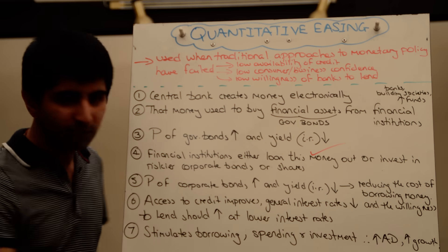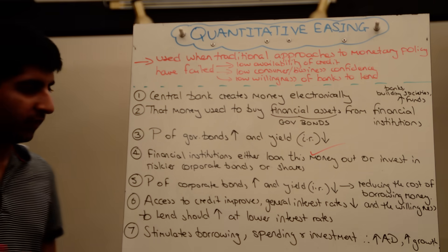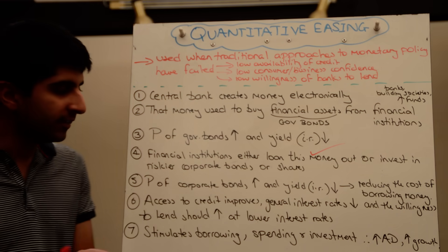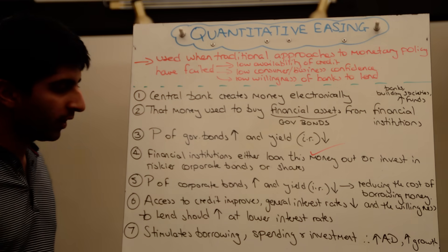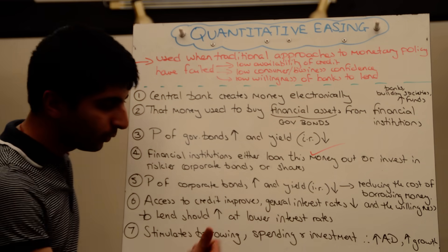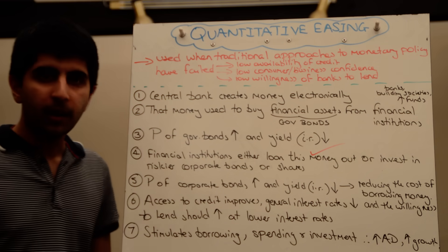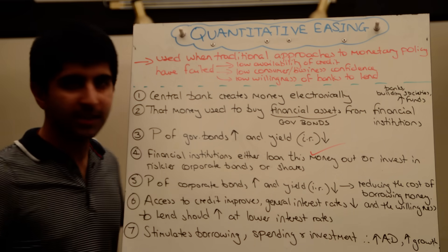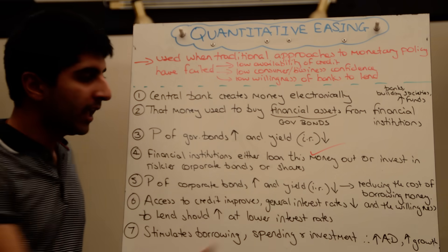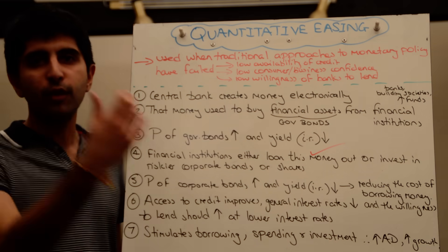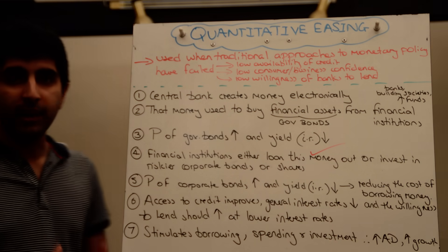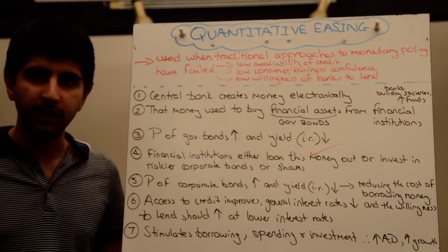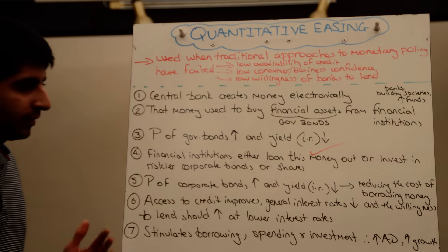And if ordinary interest rates in the economy end up falling, then borrowing may well be stimulated, saving disincentivised, and therefore with more borrowing there could well be more consumer spending, more investment taking place — increasing AD, increasing growth, reducing unemployment, and taking the economy back to a recovery stage instead of being stuck in deep recession. That was the idea.